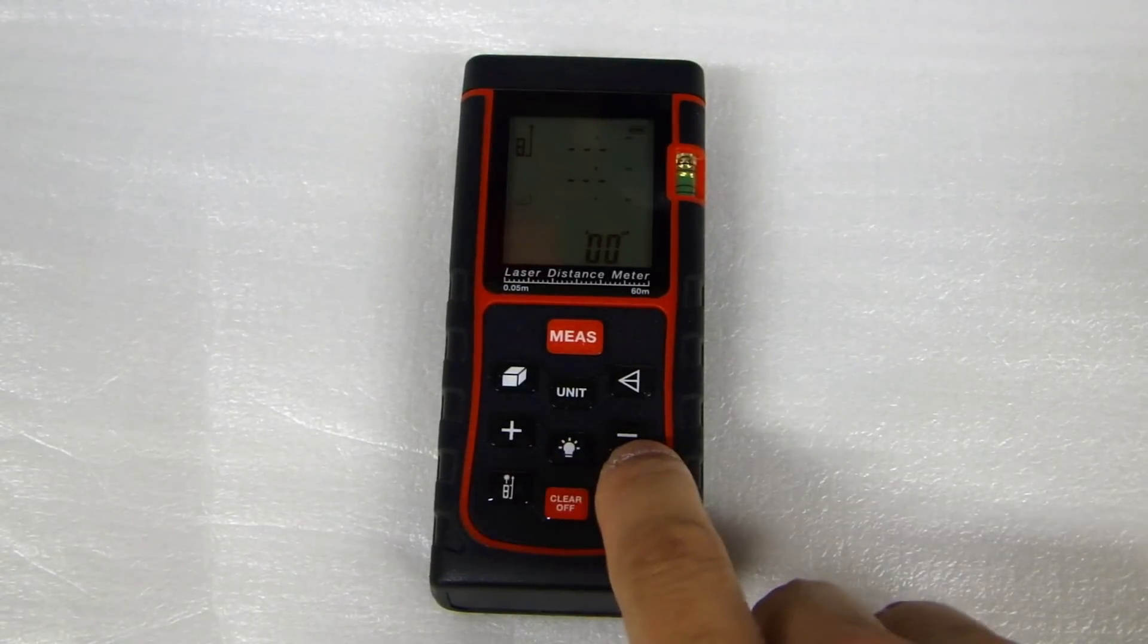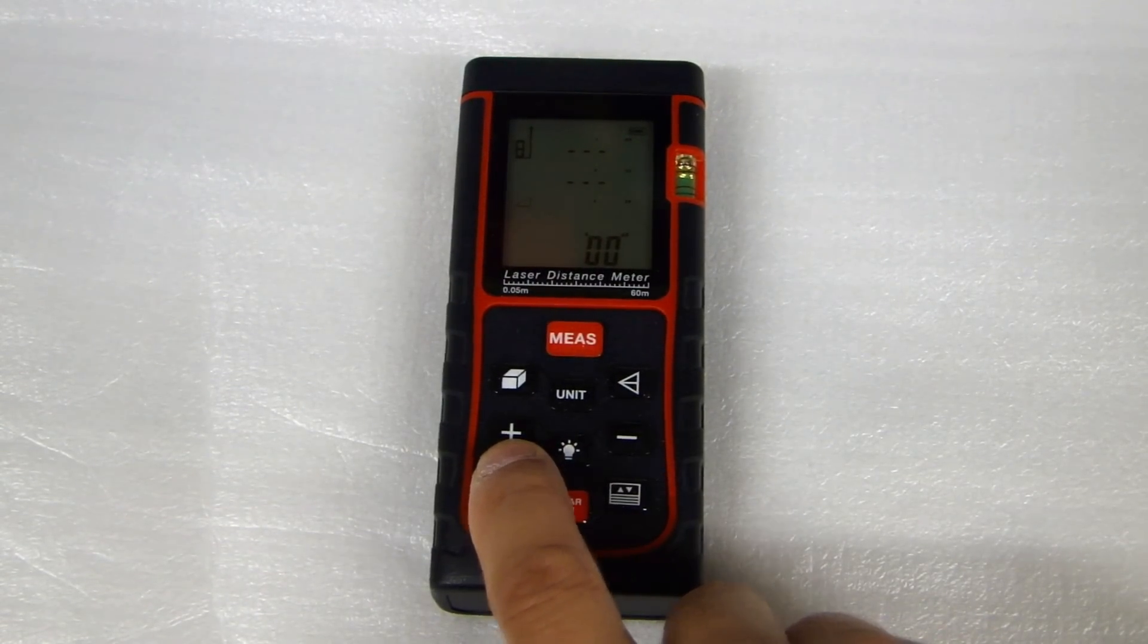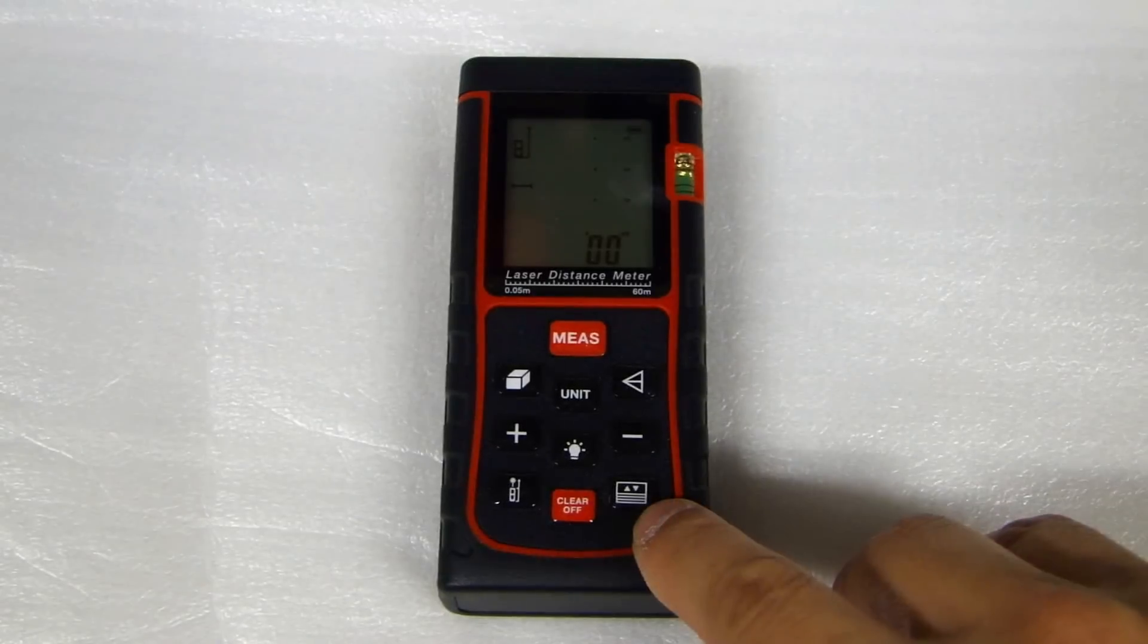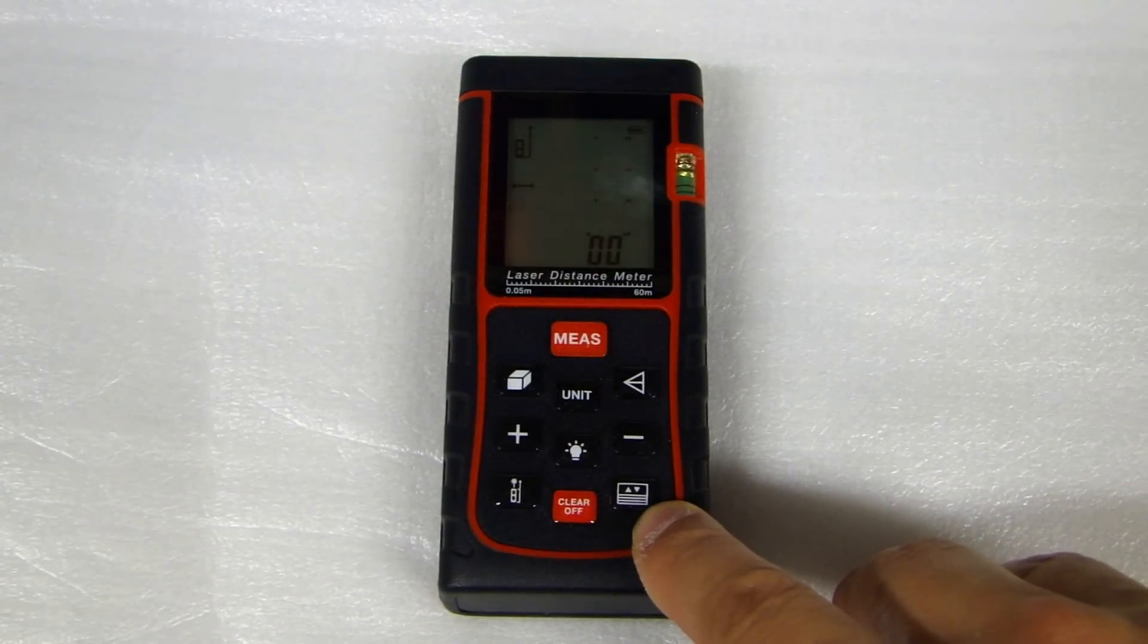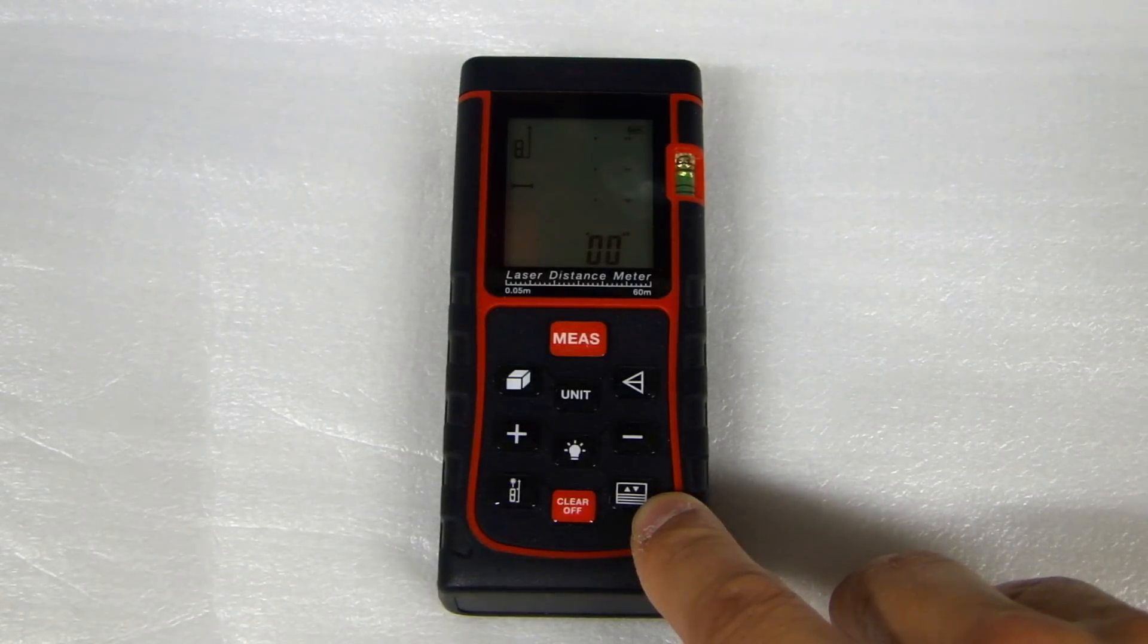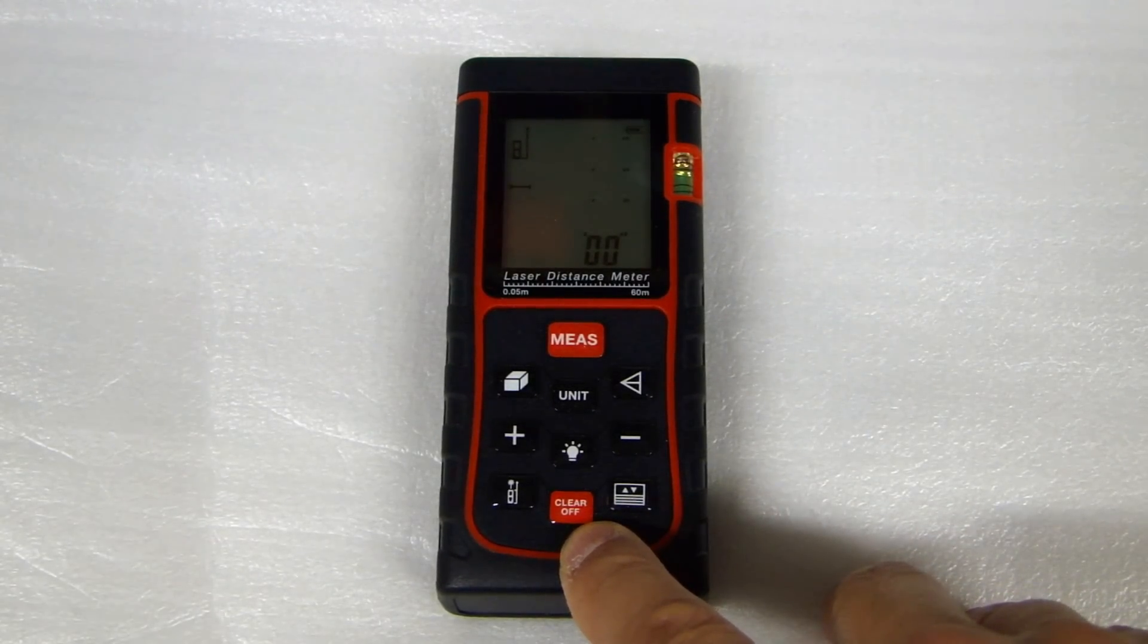The plus button and the minus button is for adding multiple measurements together or subtracting multiple measurements together. This button at the bottom right hand corner, if you have a measurement and you want to save it, press and hold this button for three seconds and it will save it in memory. If you want to read it and recall it, press this button and it will recall that measurement. You can also use this clear button to delete any saved measurements.